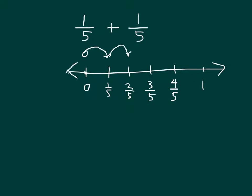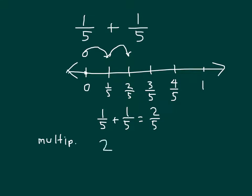So we have 1 fifth plus 1 fifth equaling 2 fifths. We've expressed this with an addition sentence, and we'll also look at it with a multiplication sentence. How many fifths were we looking at? We were looking at 2 fifths. So 2 times 1 fifth does equal 2 fifths.